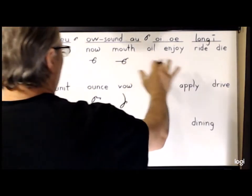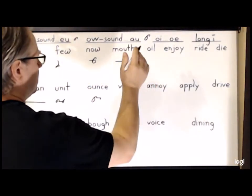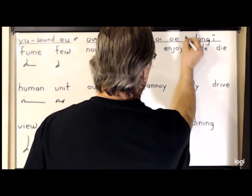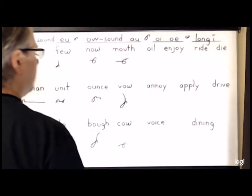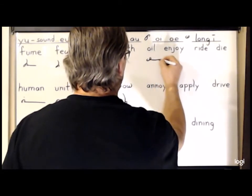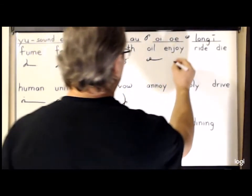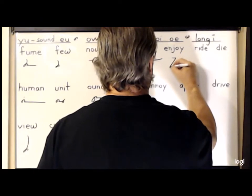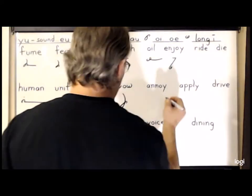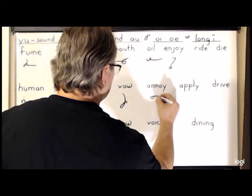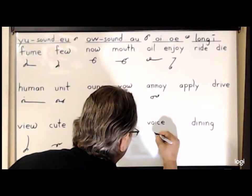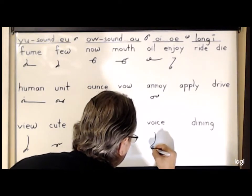For the diphthong 'oy', the O-I sound, we use the O hook and the E small circle. So for the word 'oil', we'll simply write the O, circle E, L. 'Enjoy' will be N-J-O, small circle for the E. For 'annoy', it is A-N-O-E. For 'voice', it is V-O-E-S.